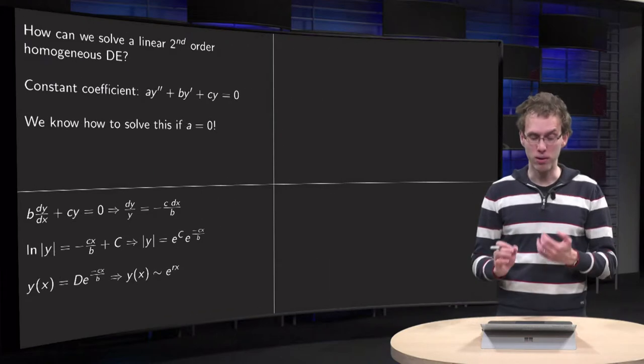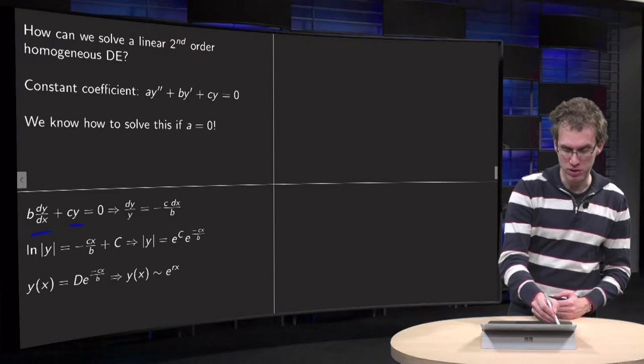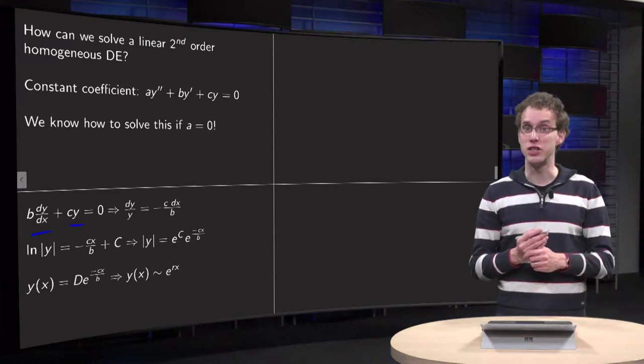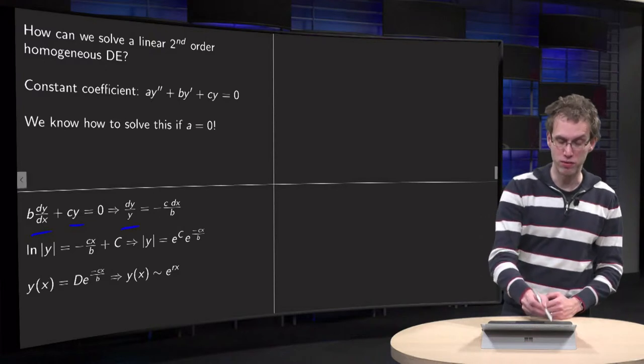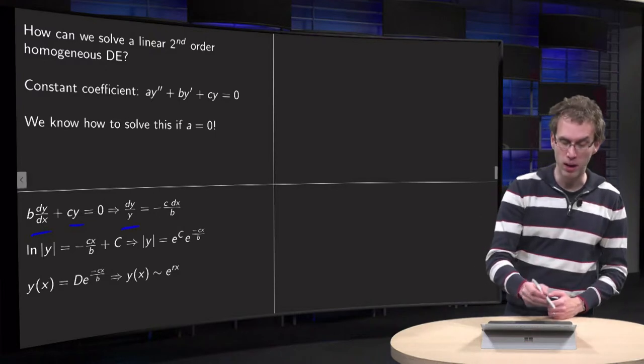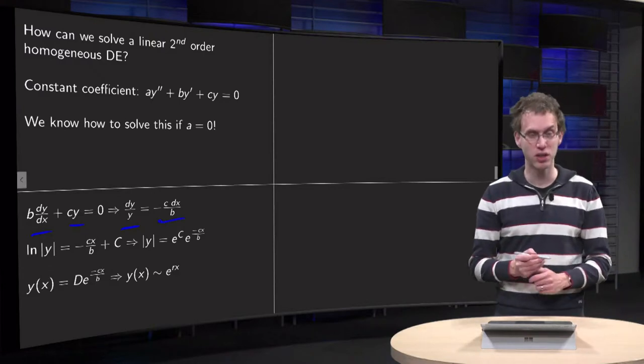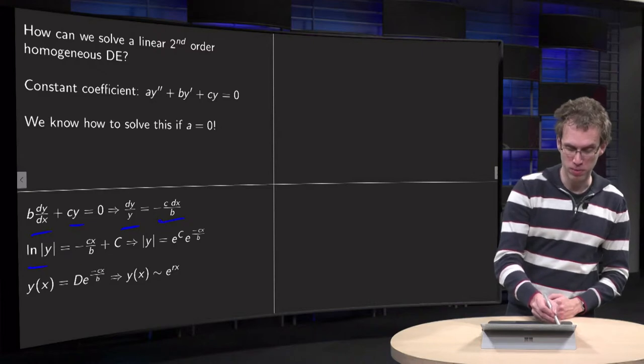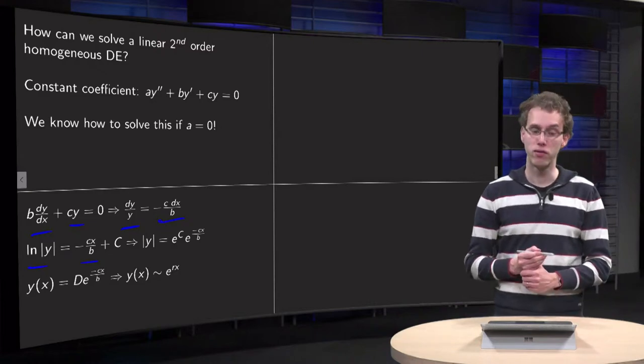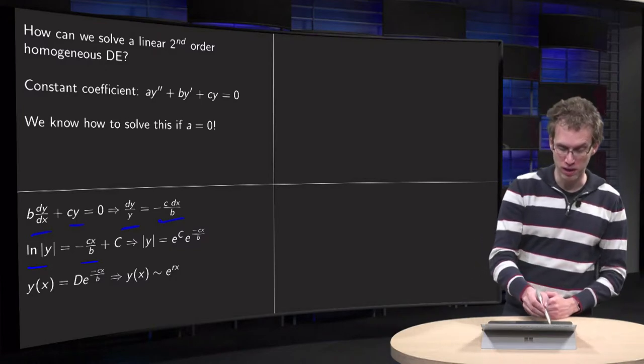So, how can we solve the a equals zero case? Well, in that case we have b*y' plus c*y equals zero. I see that this is a separable differential equation. So you get, if you separate dy over y, and bring the x to the other side, minus c over b times dx, integrate on both sides, logarithm of y equals minus c times x over b, plus some integration constant.